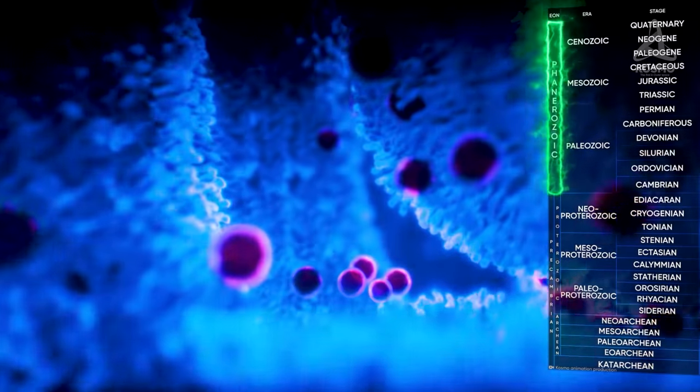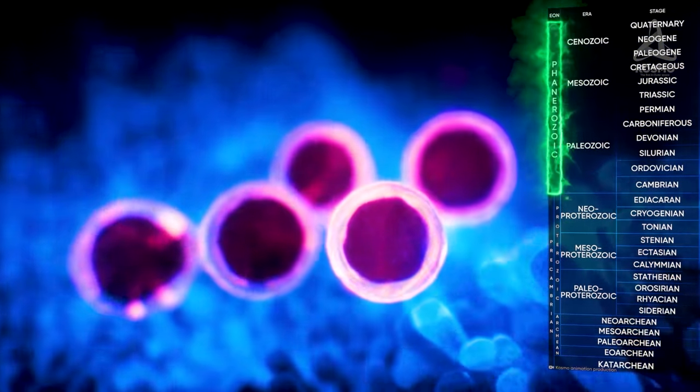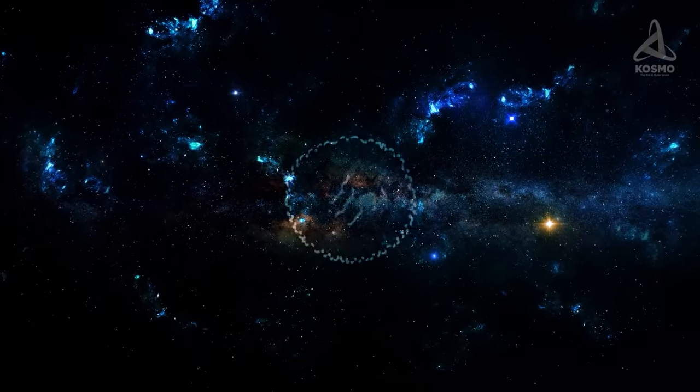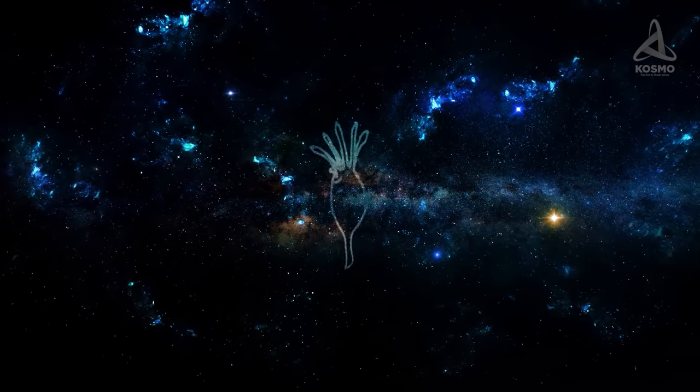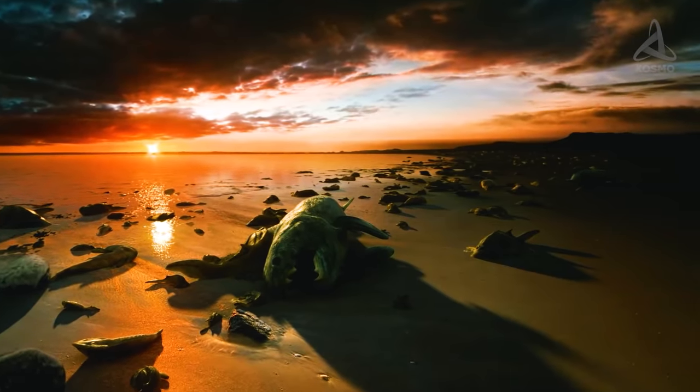542 million years ago, there began the Phanerozoic Eon, which is the Greek for the Eon of visible life. It was peculiar for periods of active evolution of different species interlaced with mass extinctions. I have told you about the major ones.